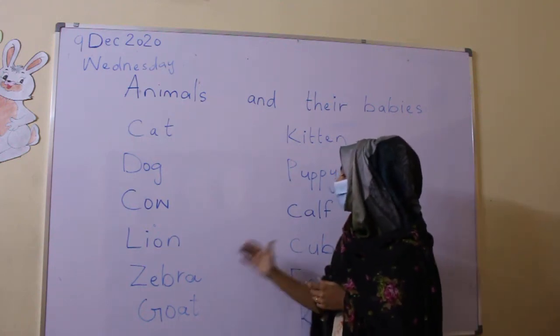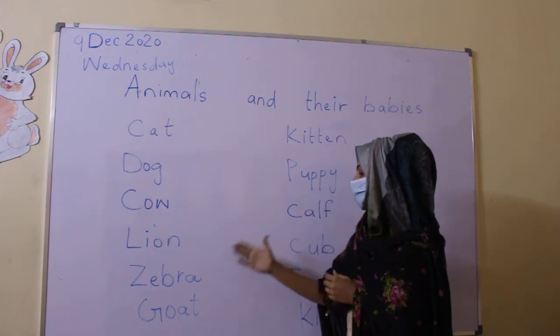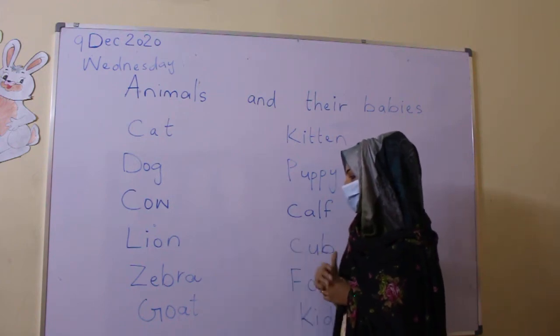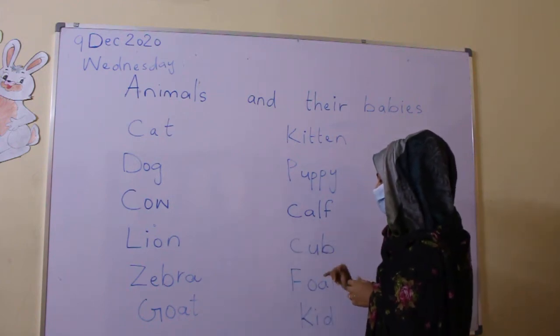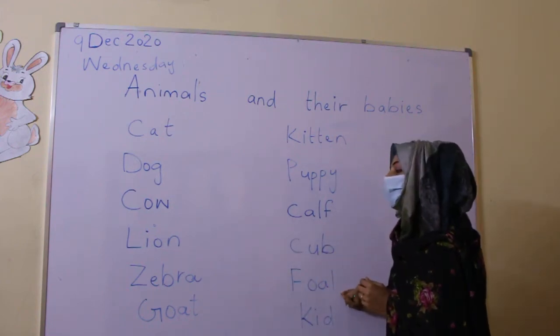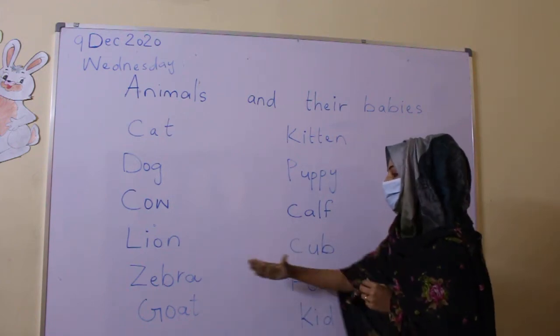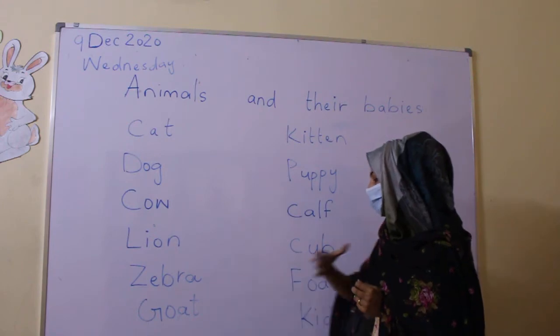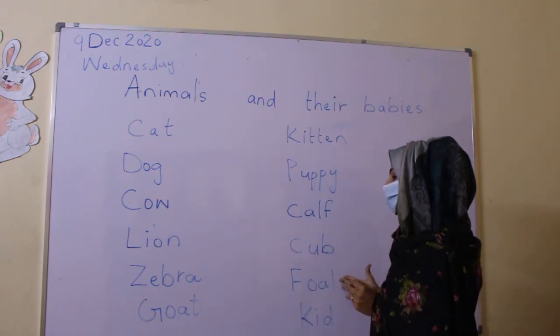Number five — zebra. Zebra. And the baby name is foal. Foal.